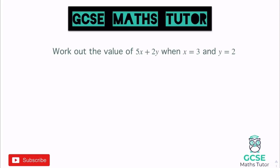It says: work out the value of 5x + 2y when x is 3 and y is 2. So 5x means 5 lots of x, and 2y means 2 lots of y. If x is 3 we sub that in, and when y is 2 we sub that in as well. I'm going to sub it in using brackets — I use this method quite a lot.